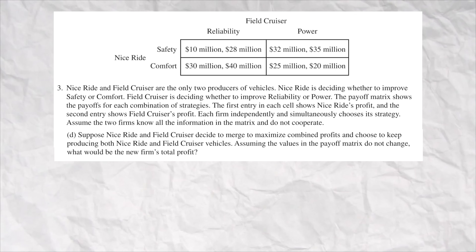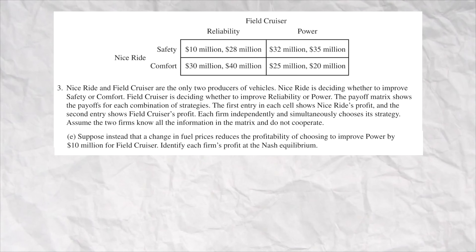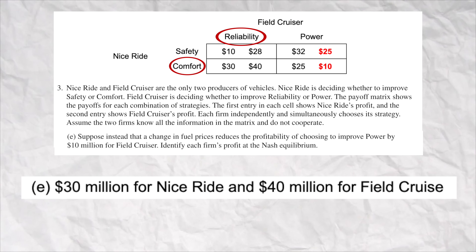Question D asks something they've never asked before — if they become a monopoly, what's going to be their total profit? I think the right answer is $70 million, because $30 million plus $40 million is the best combined profit. In part E, they said there's $10 million less profit if they focus on power, so you had to redraw the payoff matrix. Now Field Cruiser does have a dominant strategy — they're always going to go reliability no matter what, and Nice Ride is going to do comfort. The right answer is $30 million for Nice Ride and $40 million for Field Cruiser.